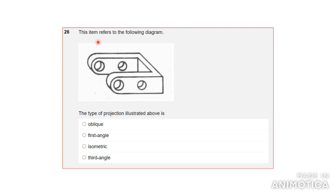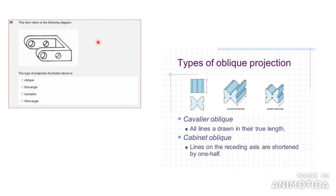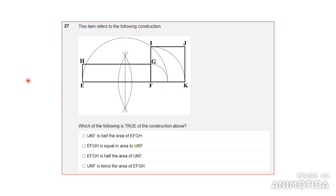Number 26: the type of projection illustrated above is called an oblique drawing. There are two types: the cavalier, where all lines are drawn to true length, and the cabinet oblique, where the receding lines are shortened by half. This differs from an isometric drawing — in isometric there are no flat horizontal areas; one side is at an angle and the other also at an angle, usually 30 degrees. So this is called oblique projection, and the answer is A.